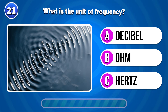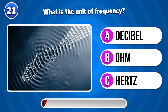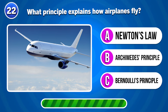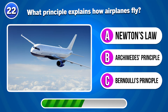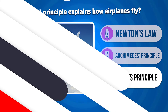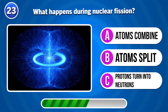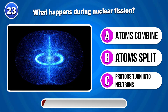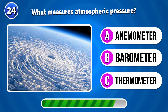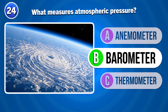What is the unit of frequency? Hertz. What principle explains how airplanes fly? Bernoulli's principle. What happens during nuclear fission? Atoms split. What measures atmospheric pressure? Barometer.